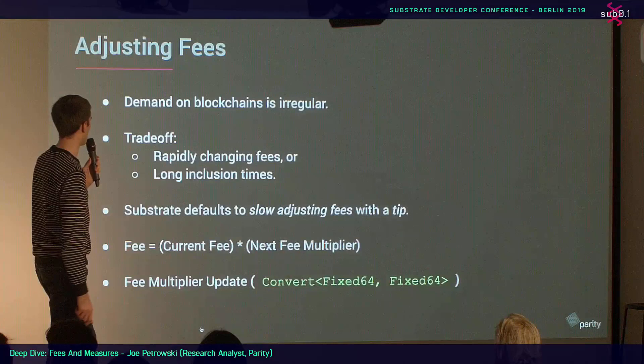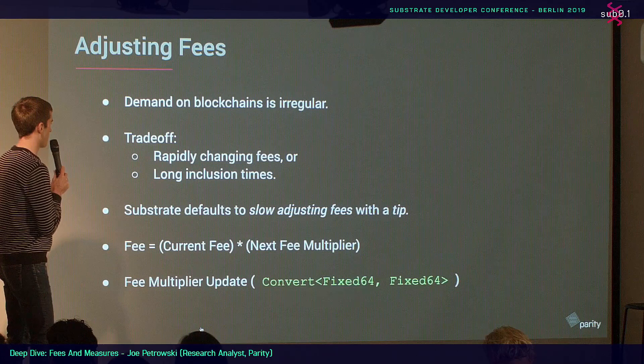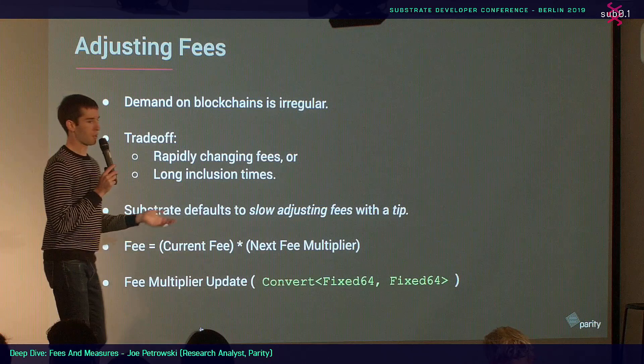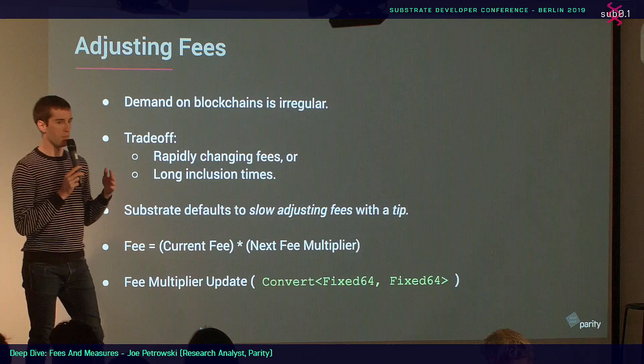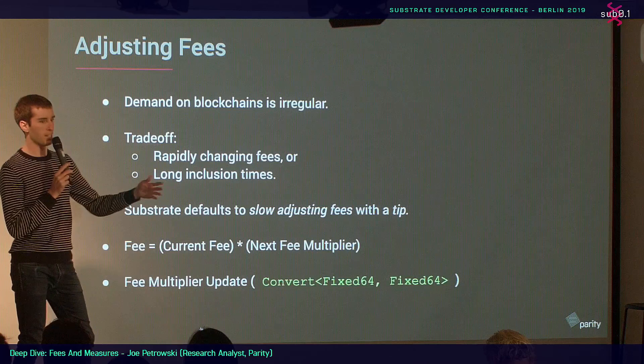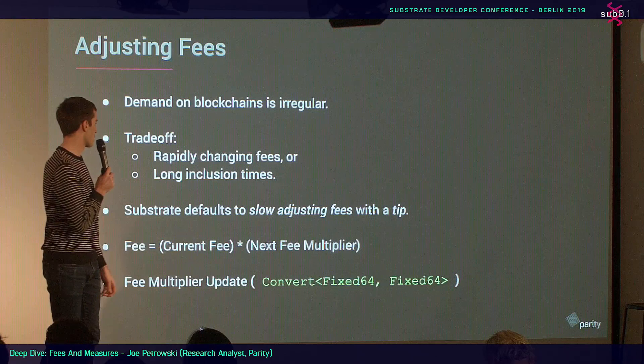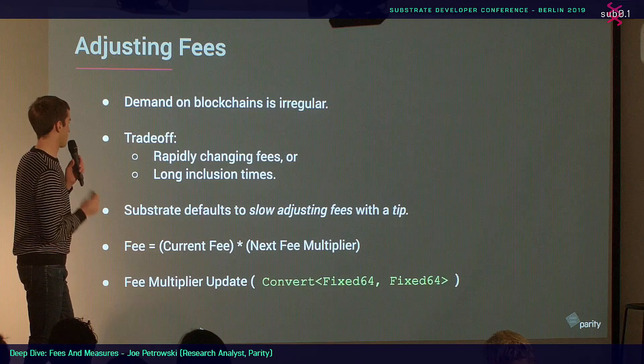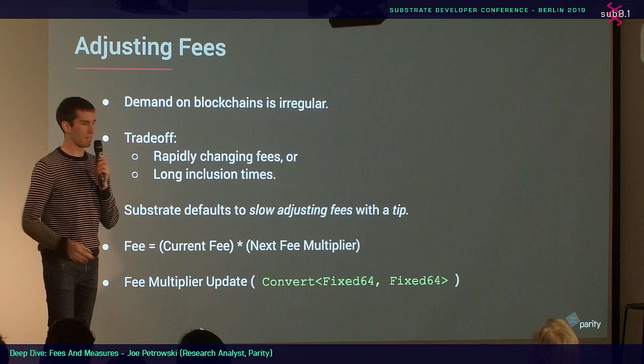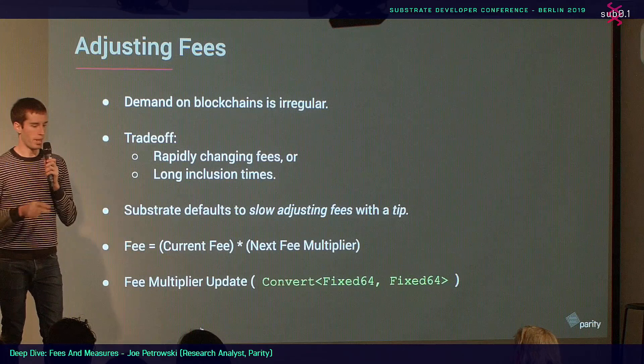Demand on blockchain is irregular, and there's a tradeoff between rapidly changing fees and long inclusion times. A fee that adjusts very quickly helps prioritize transactions, but your fee could change by 10% over the course of a mortal extrinsic across 50 or 100 blocks, and people might prefer to wait. The alternative is long inclusion time. What Polkadot does instead is use slow-adjusting fees and adds a tip. You add the tip optionally, and in the transaction queue priority is sorted by the sum of all four components — base, byte, weight, and tip.